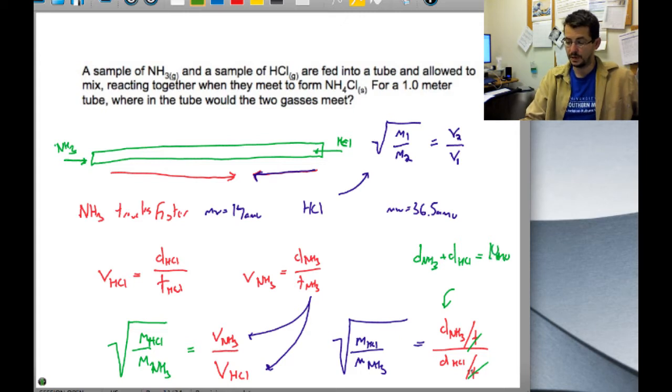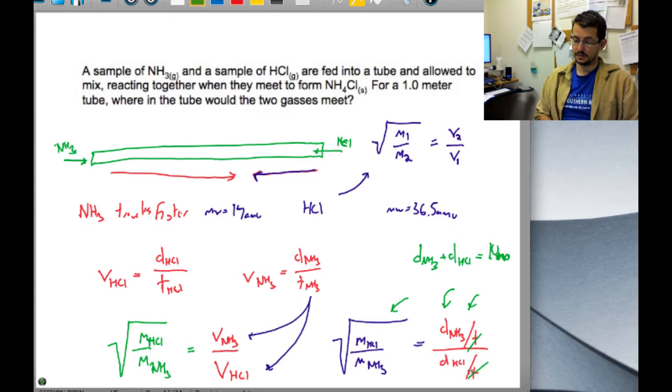Because it equals one meter, these two quantities are equal. Once we have that, we can rearrange and solve each of these equations and plug it into the one above. We can solve for our molecular weights to get a number, and this gives you the ratio between those distances.